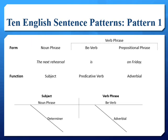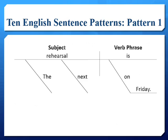Typically, a subject complement follows a be verb. A subject complement renames or describes the subject before the be verb. An adverbial modifying the be verb is not a subject complement. Sentence pattern one is a special sentence construction from the other sentence patterns. When we diagram this sentence, the preposition 'on' is placed on a slanted line, whereas the noun 'Friday' is on the flat line extending from the slanted line. This is how to diagram an adverbial branching from a verb.